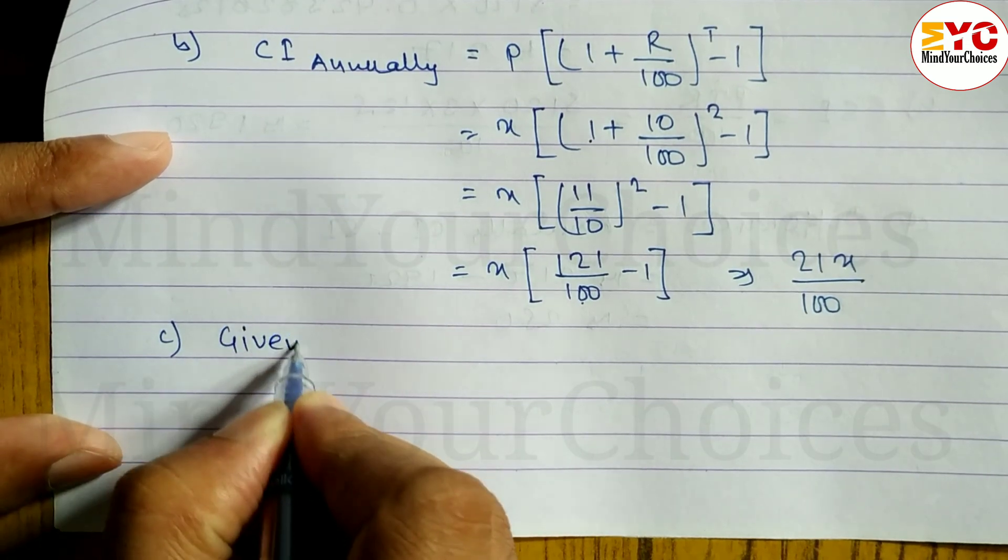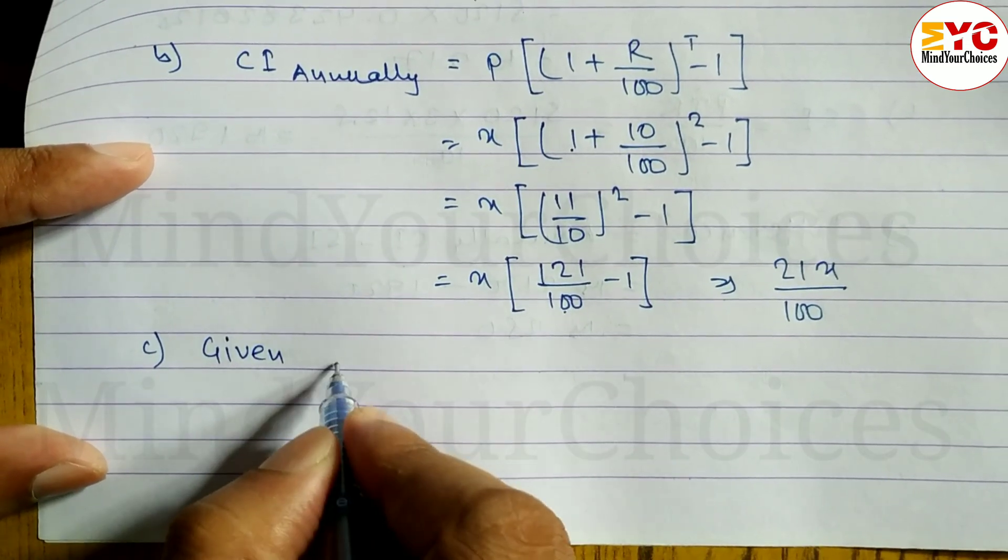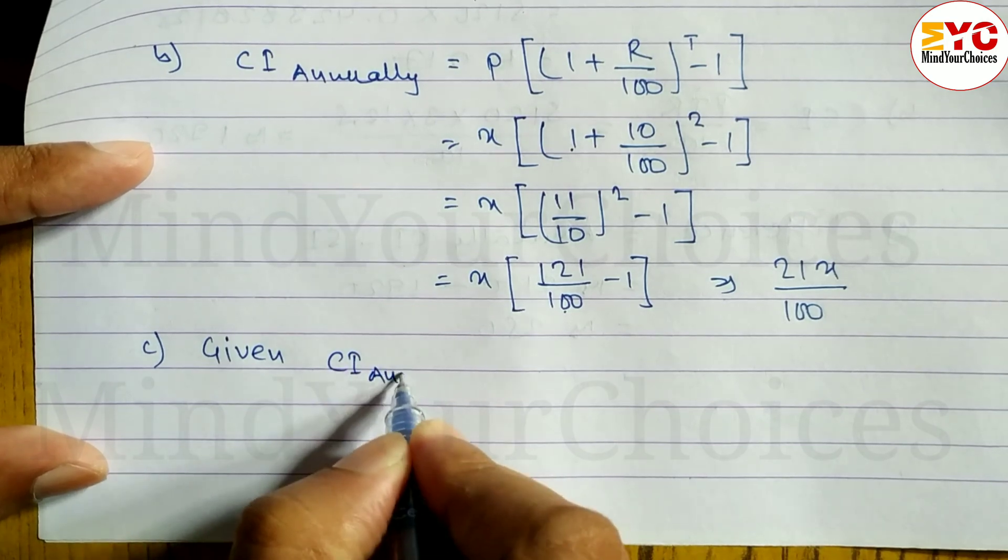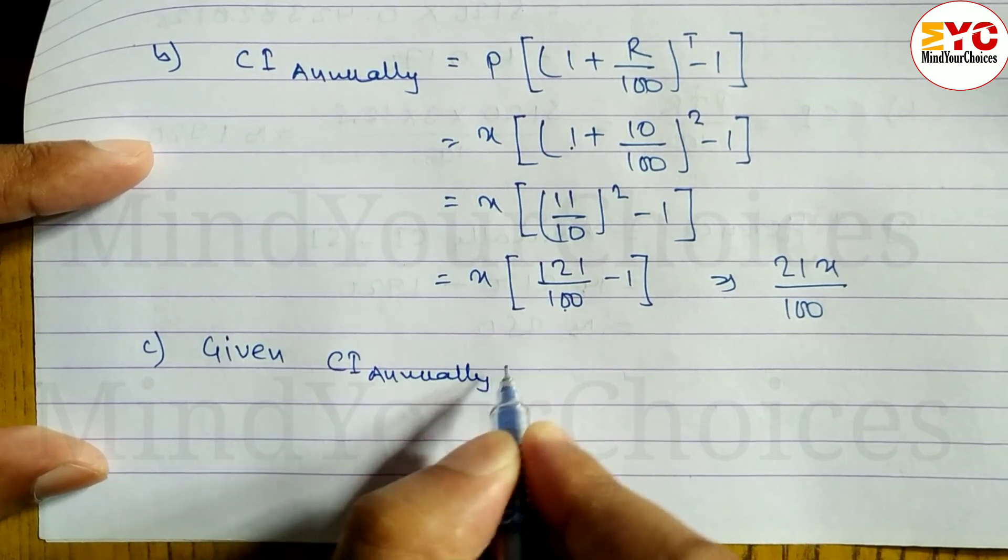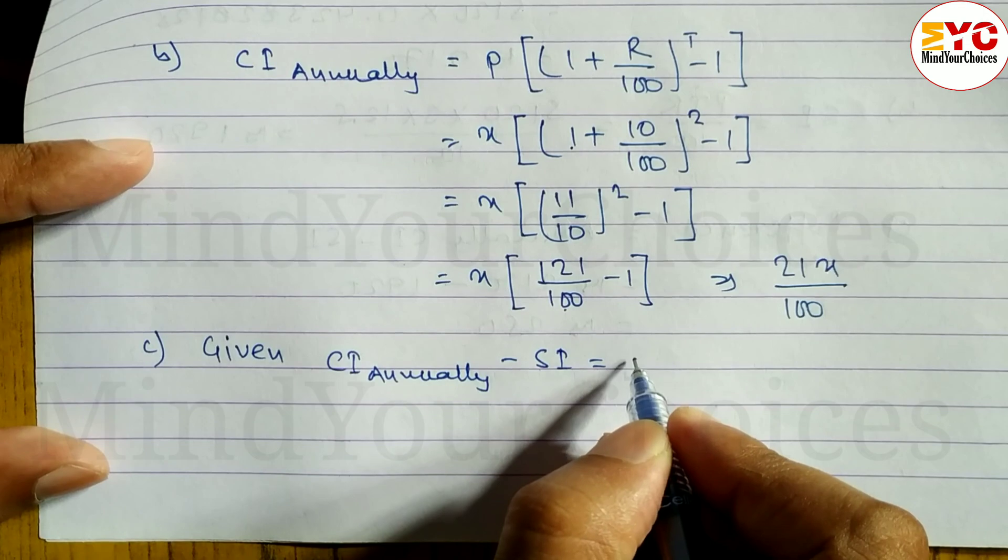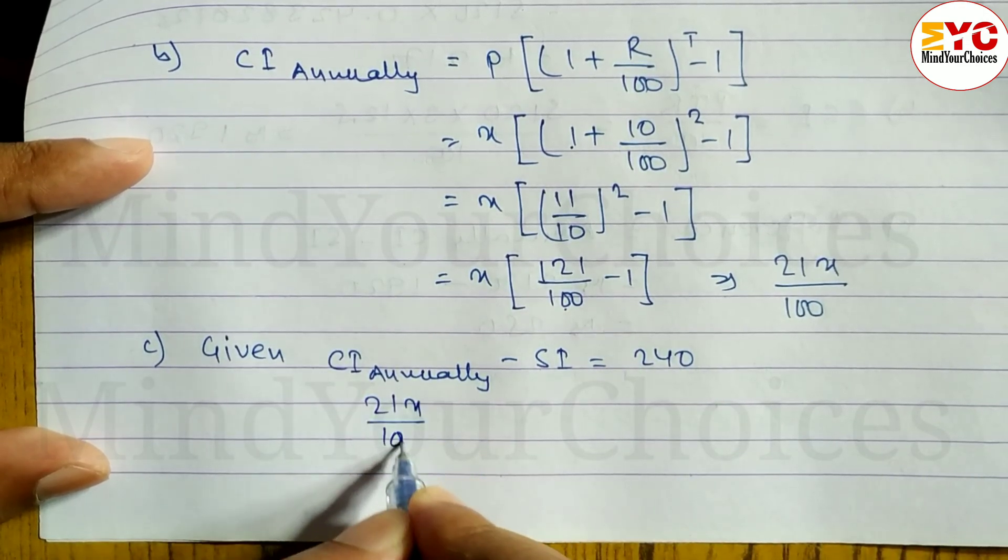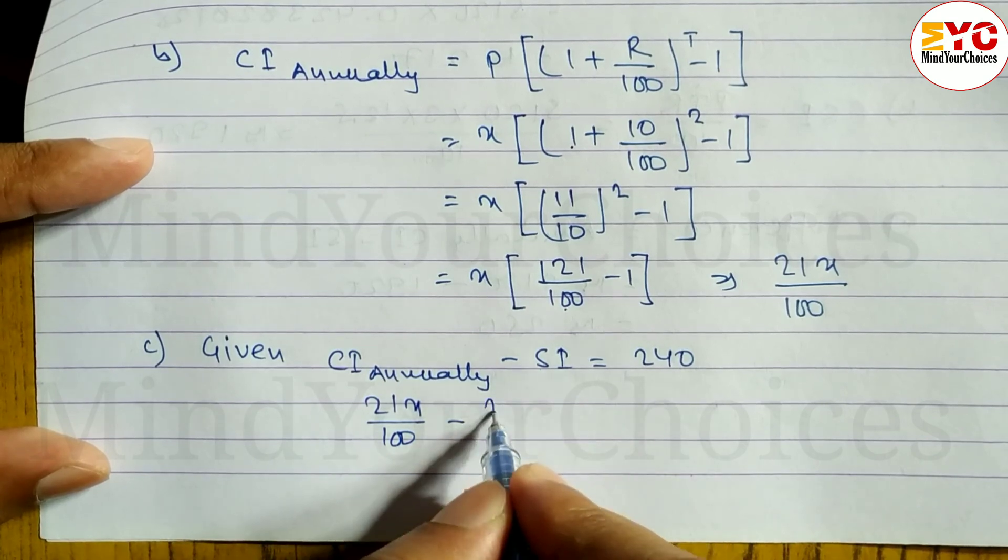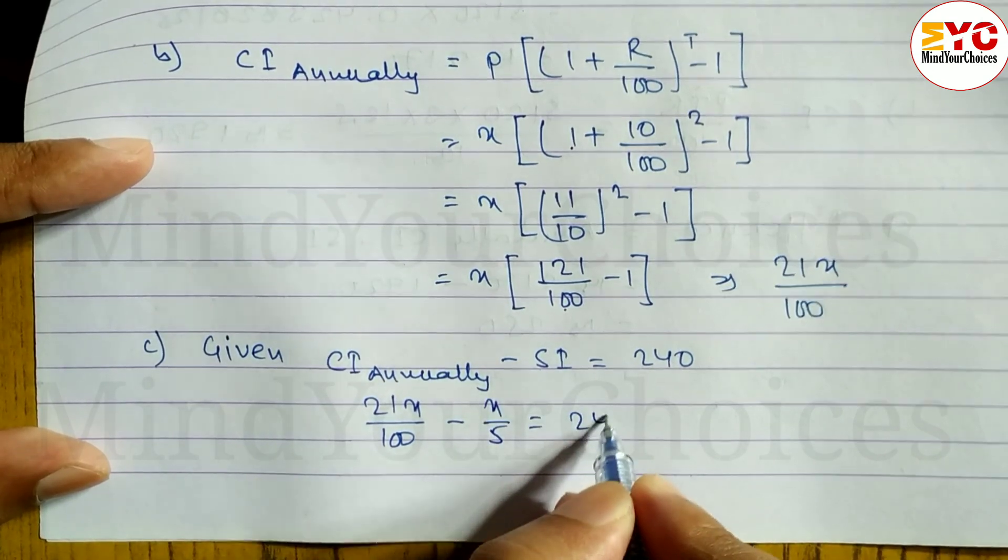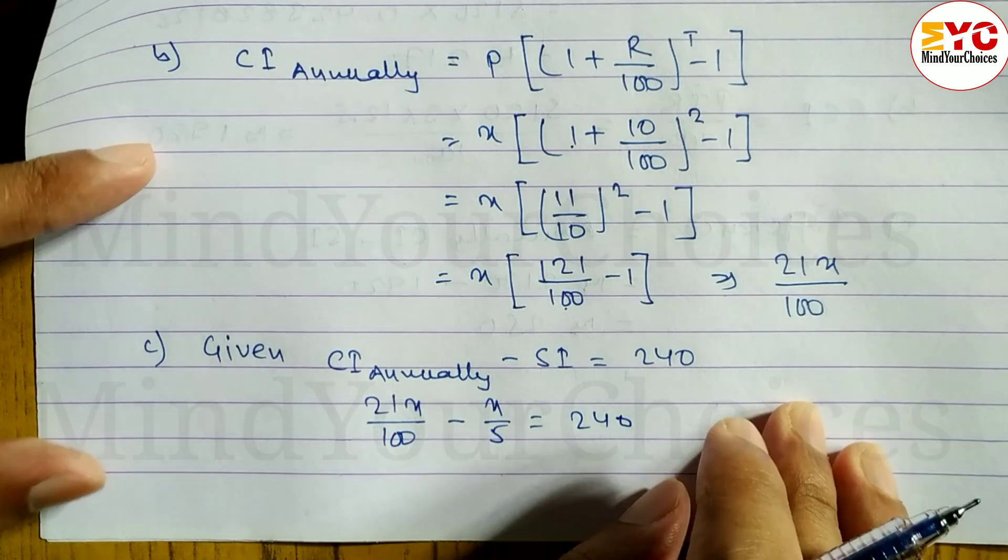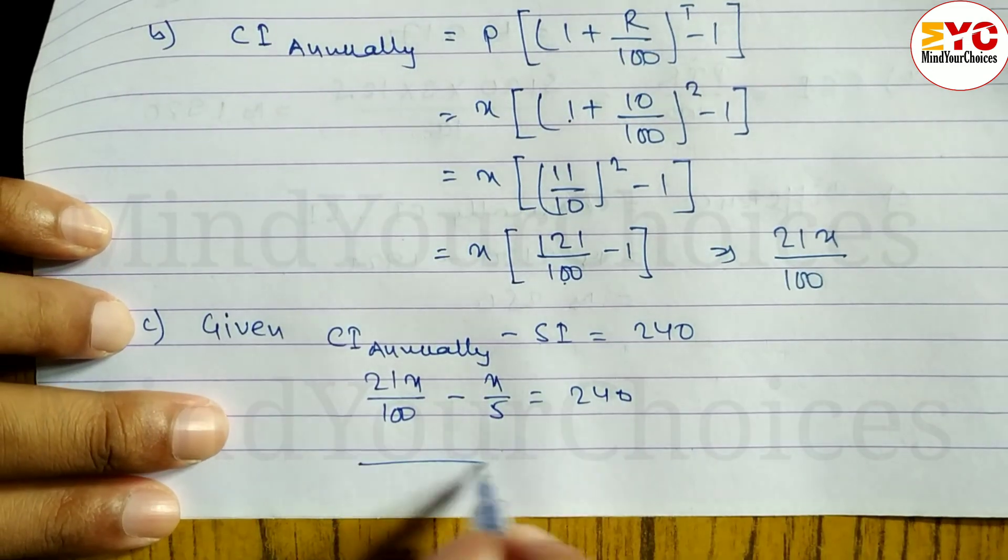Given, or according to question, CI annually minus SI is equal to 240. CI is 21x divided by 100 minus SI which is equal to x by 5, equals 240.